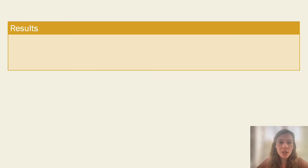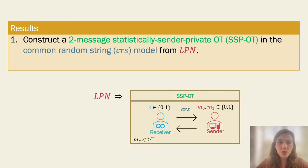and in the paper we show the following two results. So first, we show that we can construct a two-message Statistically Sender-Private Oblivious Transfer in the common random string model using just LPN,